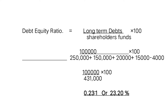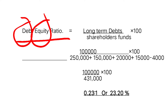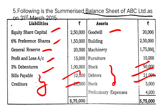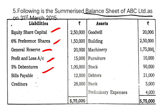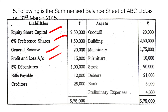Debt-equity ratio formula: long-term debts divided by shareholders' fund. In this problem, the only long-term debt is five percent debentures of one lakh. Shareholders' fund includes equity share capital, six percent preference shares, general reserve, and profit and loss account. These four items form the shareholders' fund.